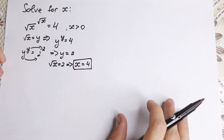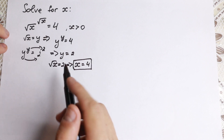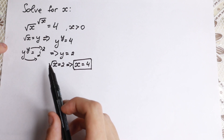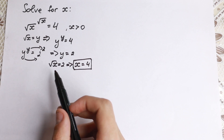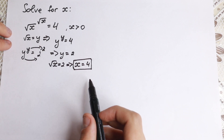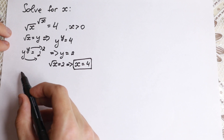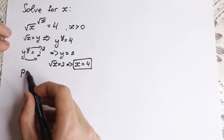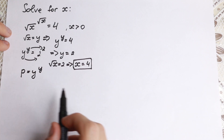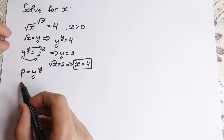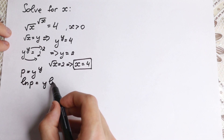I want to go further without using logarithm. Let's analyze this function more deeply — whether it's monotonic increasing or decreasing, and find its minimum. Let's use a substitution: let p equal y to the power y. Taking the natural log of both sides, we have: natural log of p equals y times natural log of y.